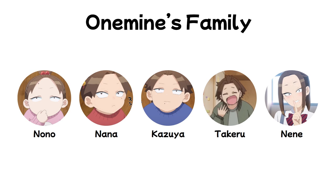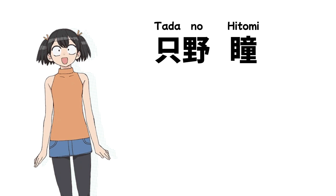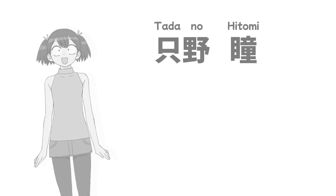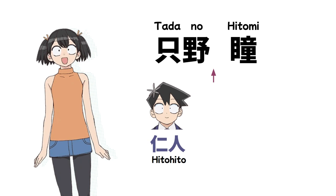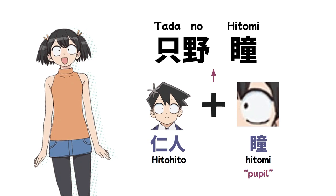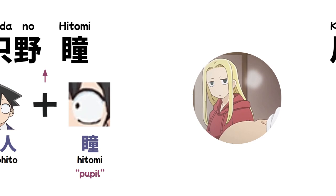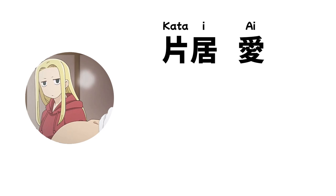Tadano's only named family member is his little sister Tadano Hitomi. Her name comes from her brother's name Hitohito — it's a feminized version of it. The word 'Hitomi' also means 'pupil' as in of the eye, which might reference the Tadano family's trademark giant eyes with tiny little dot pupils. Katai Ai is Katai Makoto's younger sister, glimpsed in the anime but not formally introduced yet. 'Katai' means 'hard' or 'tough,' and 'Ai' means 'love' — when season three comes around we'll see how that relates to her character.